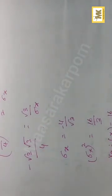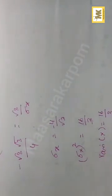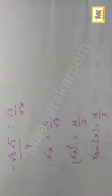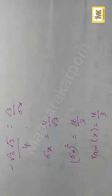Squaring sigma x, the variance of x is equal to 16 by 3. The right option is 16 by 3.